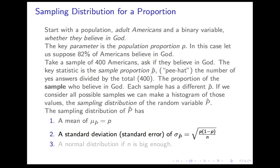The other subtler point is that sigma's dependence on P looks complicated, but the effect of multiplying P times (1 minus P) and taking the square root means it doesn't vary much as you vary P. Different values of P end up having pretty similar standard deviations, except they get smaller if P is very close to 0 or 100%. That's a fact we'll rely on later — sigma is not very sensitive to P.